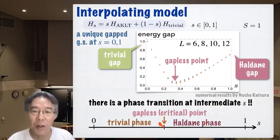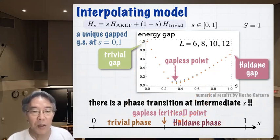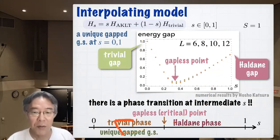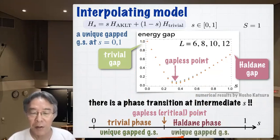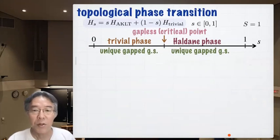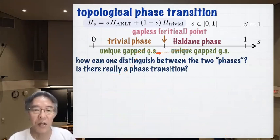Let's draw a phase diagram. Here we have a critical point, a trivial phase on one side and the Haldane phase on the other. What characterizes the two phases? In the trivial phase: unique gap ground state, no symmetry breaking, no long-range order. In the Haldane phase: also a unique gap ground state, no symmetry breaking, no long-range order — so they look the same! We should ask: how can we distinguish between these two phases, or even whether there is really a phase transition?